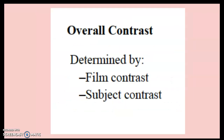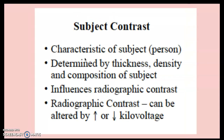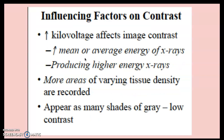Overall contrast is determined by film contrast and subject contrast. Film contrast is under the manufacturer's control and is affected by development time and developer temperature — it can increase density. Subject contrast depends on the person and is determined by their thickness, density, and composition. For example, you would need to adjust the kilovoltage differently when working on a child versus a football player, because their subject thickness is different. Higher kilovoltage increases the mean energy, produces higher energy X-rays, and records more areas of varying tissue density.